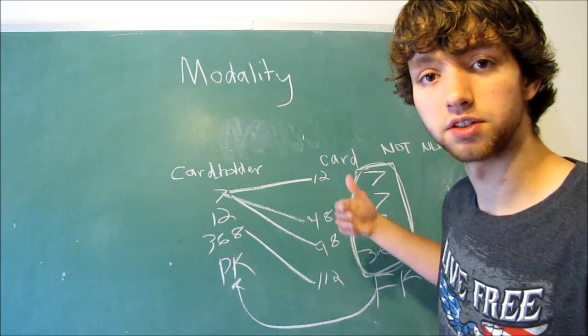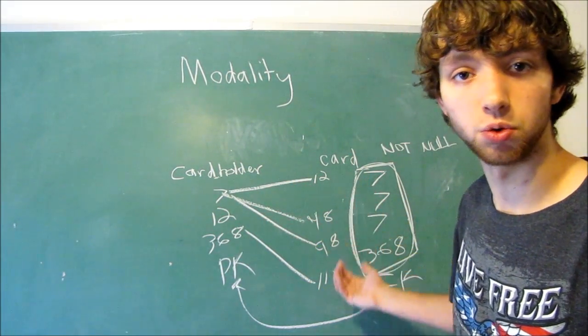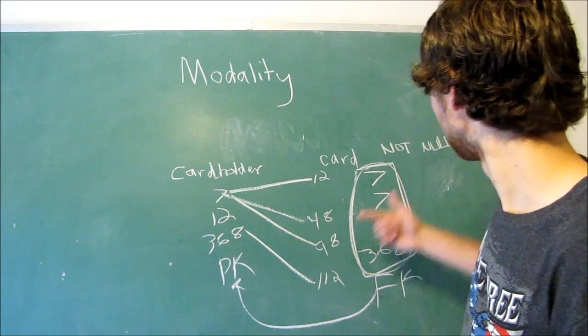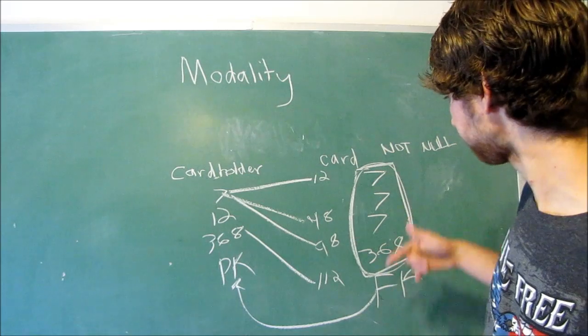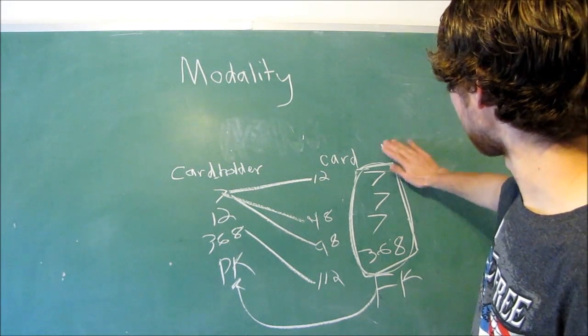If we wanted this database to be able to store cards that don't have owners, we would not want the not null characteristic because that's going to prevent it. So that's kind of how that works. So if we take that off, then we could have a card down here with the ID of 101 that doesn't have a card owner.